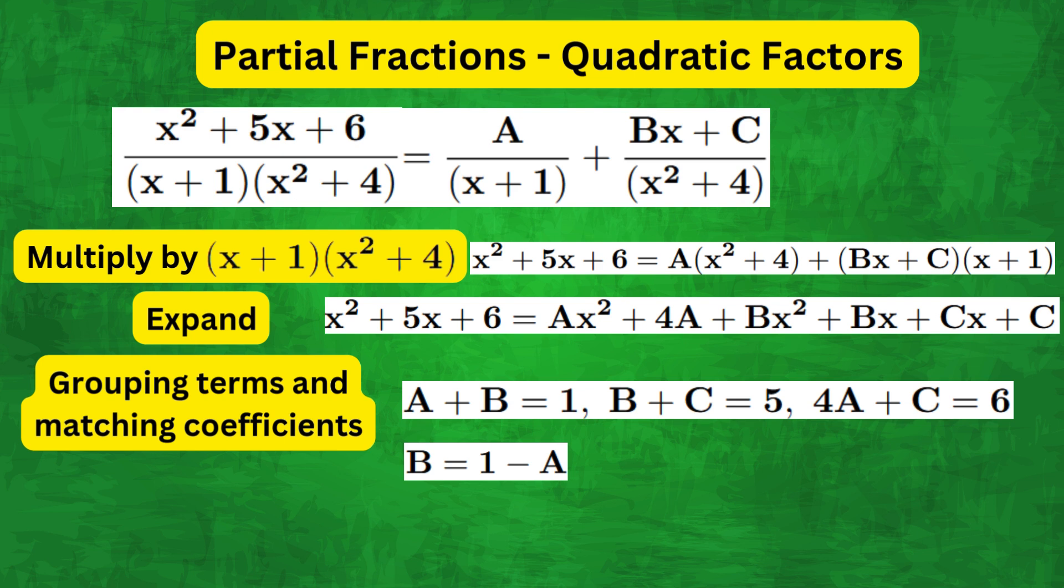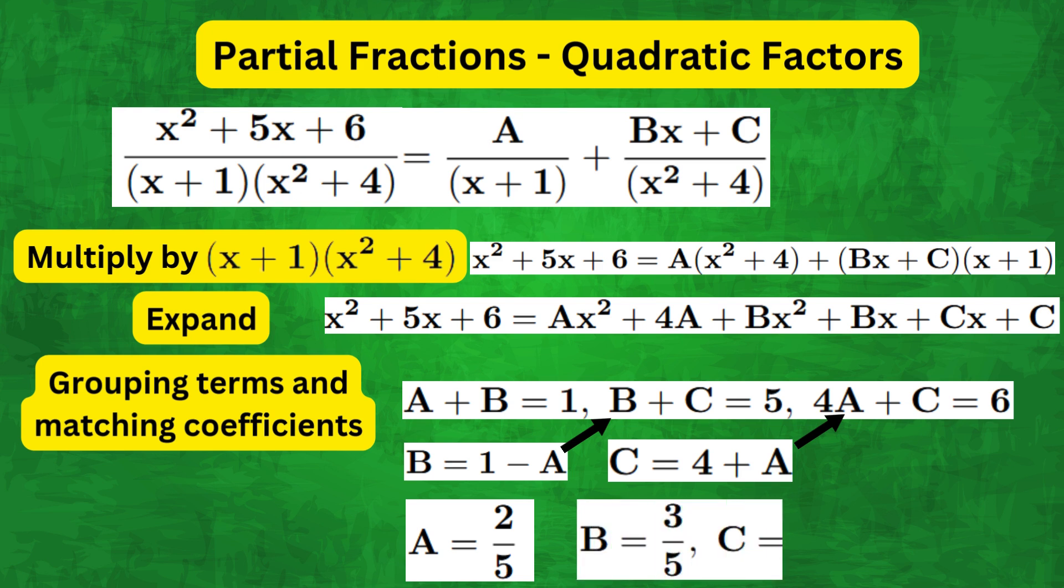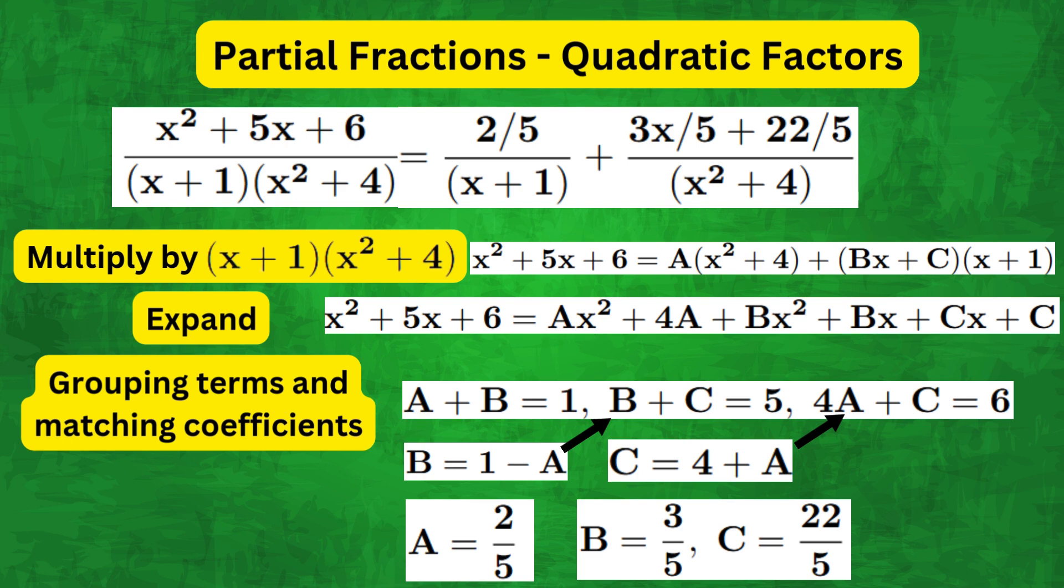From the first equation we get B = 1 - A, which we substitute into the second equation to get C = 4 + A, and then substitute C back into the third equation and solve to get A = 2/5. Therefore B = 3/5 and C = 22/5, which gives us the final decomposition as (2/5)/(x + 1) + (3x/5 + 22/5)/(x² + 4).